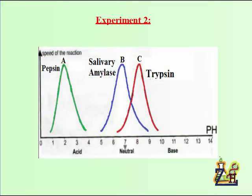Now experiment two. In this experiment we can see a graph that shows the variation of speed of the reaction of three different enzymes as a function of pH medium. And to remind you, pH medium has three types: acidic, neutral, and basic. pH 7 is the neutral. Before 7 we have acidic medium and after 7 there is basic medium. Now as it shows in this graph we have three curves.